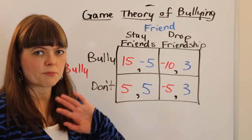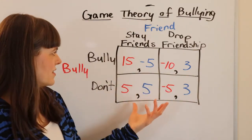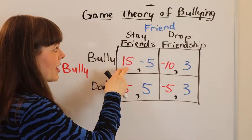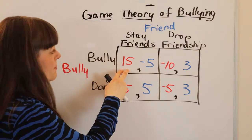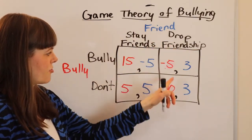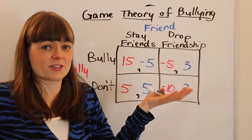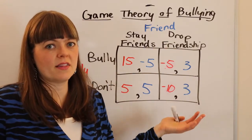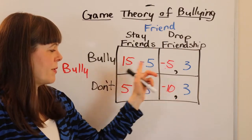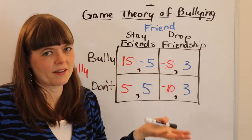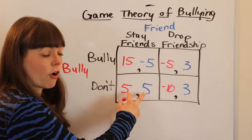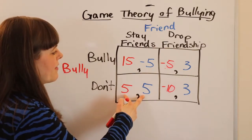Let's take a look at the specific payoffs and briefly how I constructed them. I basically asked which box is best for the bully. The bully likes to bully and have everybody continue to stay friends with them. The lowest payoff for the bully in this table is when the friend drops the friendship and they haven't even bullied — meaning there's something else about them that people don't like, and that feels bad. The baseline happiness in the friendship for all friends, if the bully does not bully, is going to be five and five.